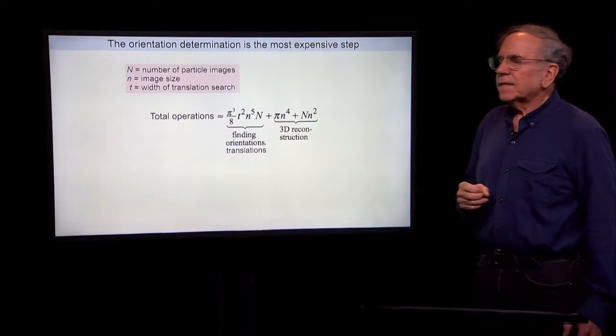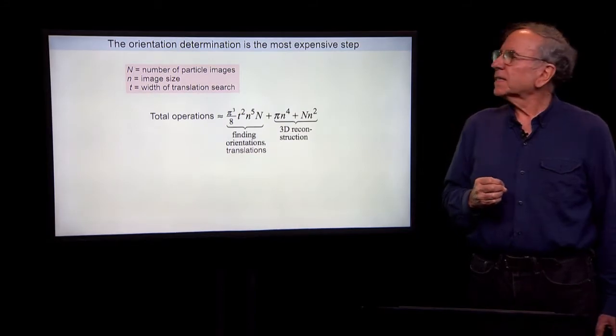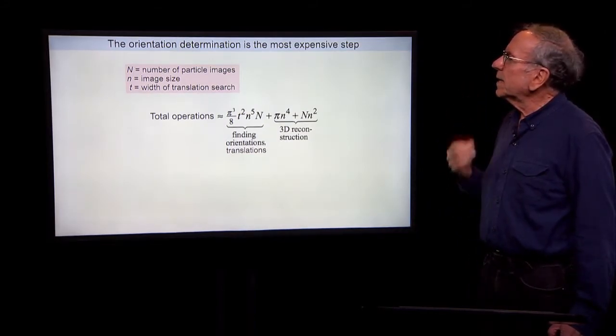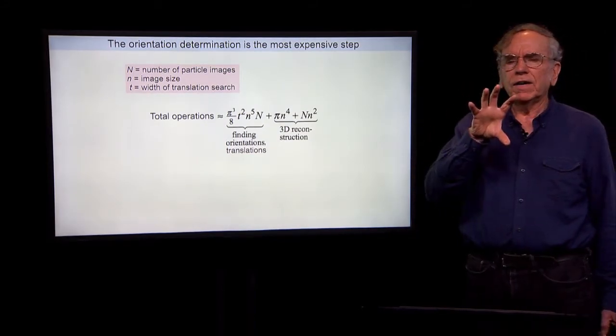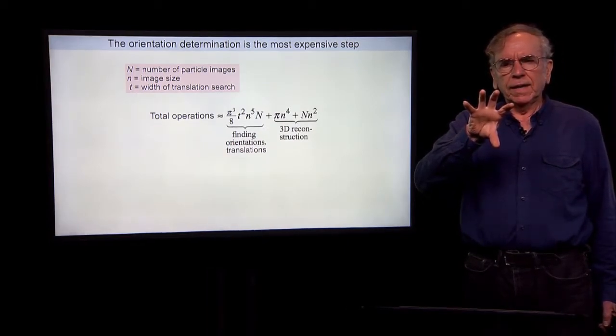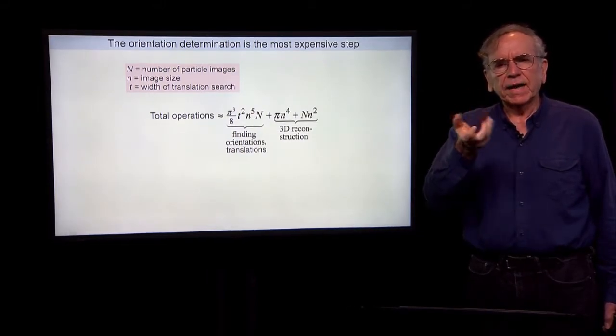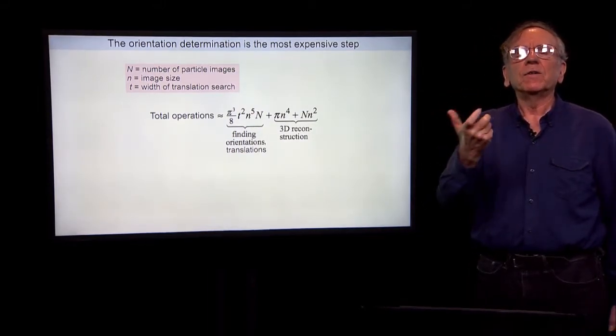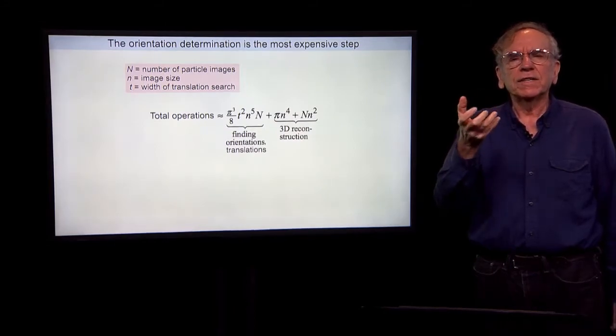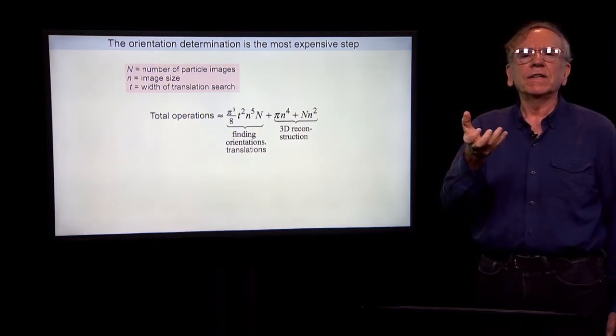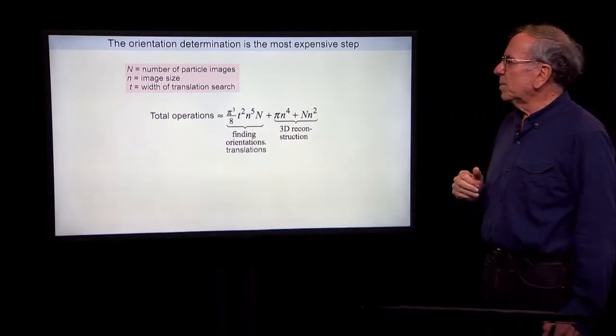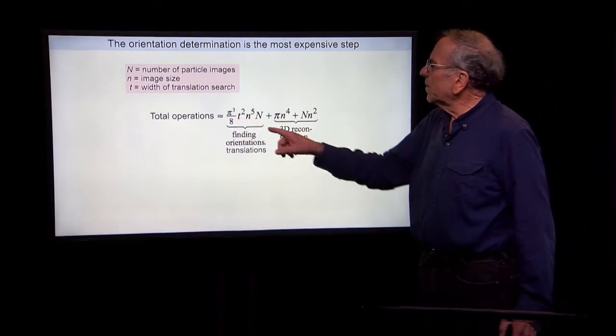Now, this is computationally very expensive. The orientation determination requires that we take a reference, we rotate it, we compare many thousands of possible different orientations, projections at many thousands of different orientations with our experimental image.